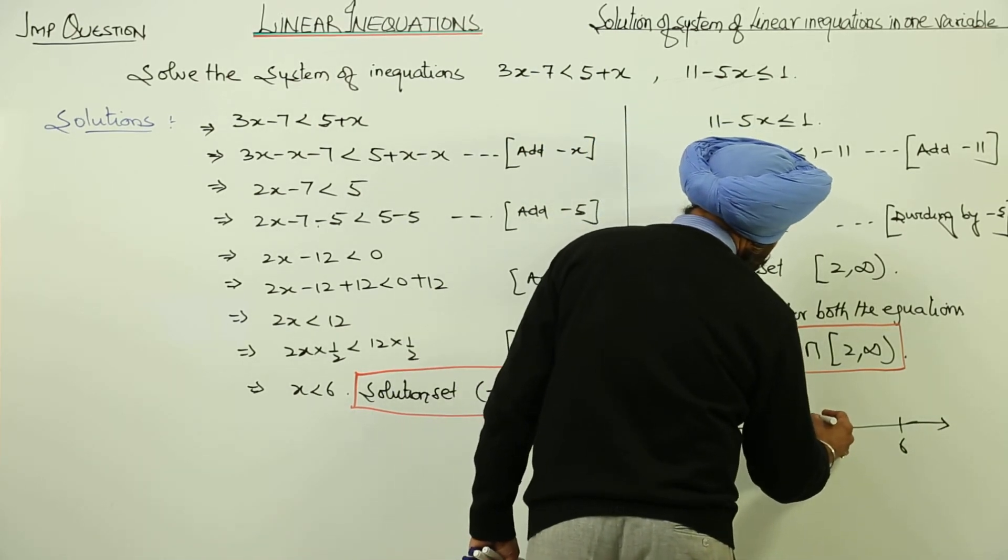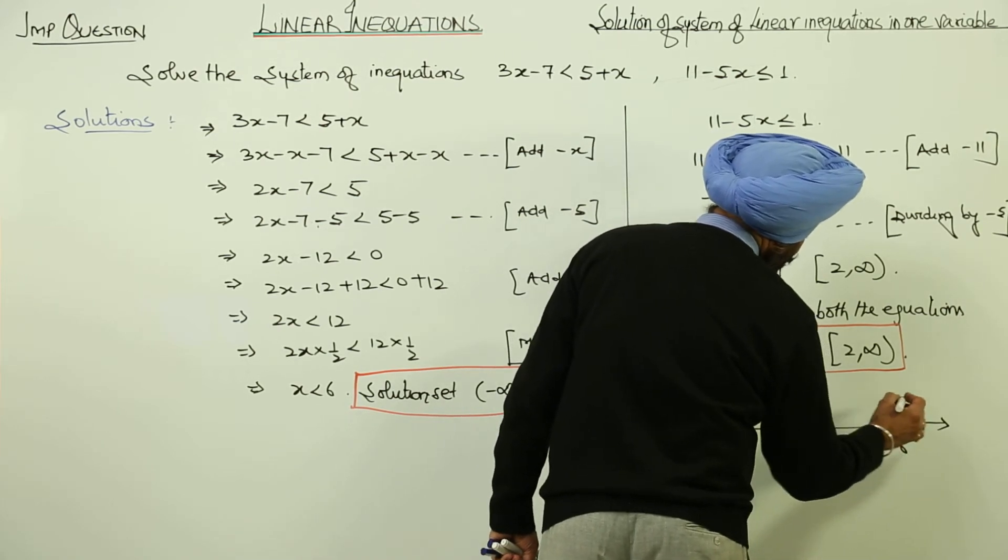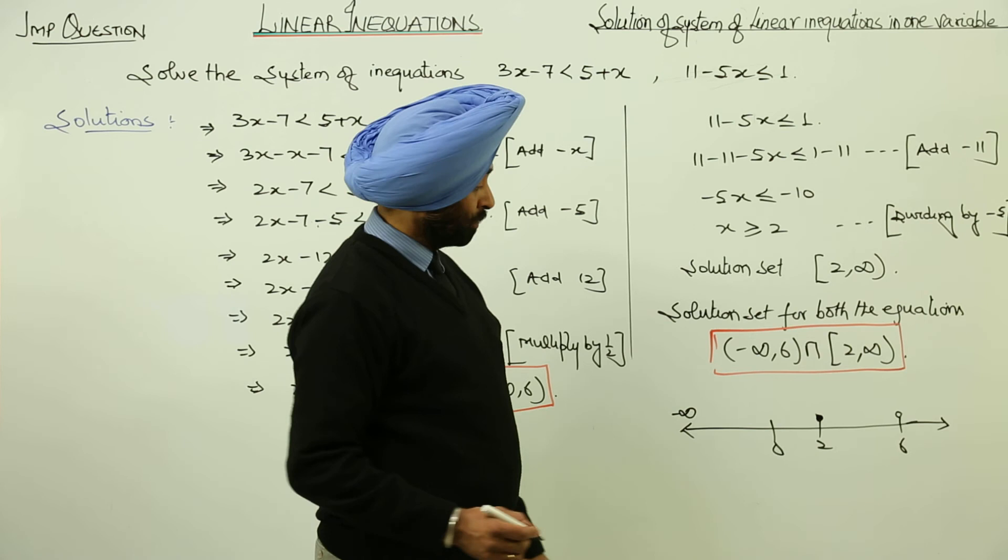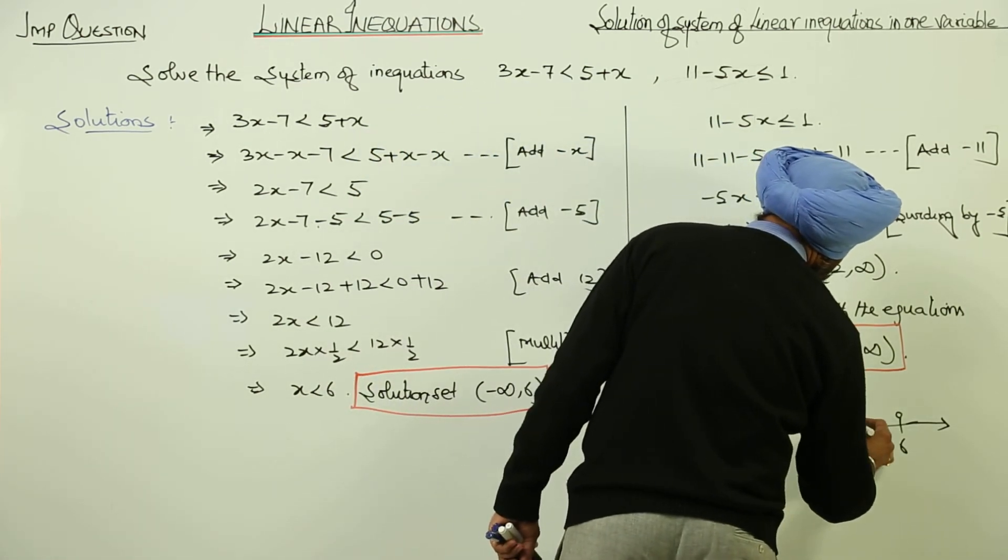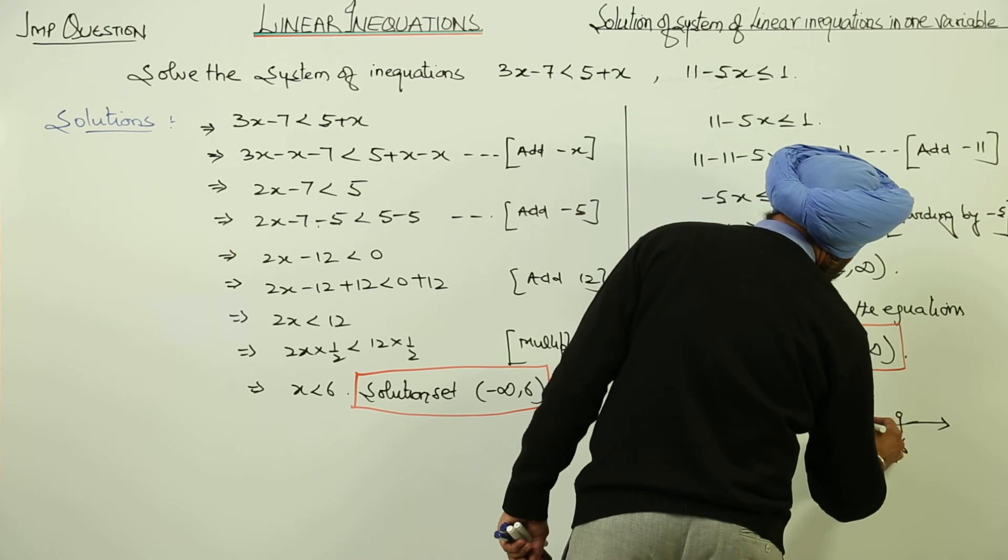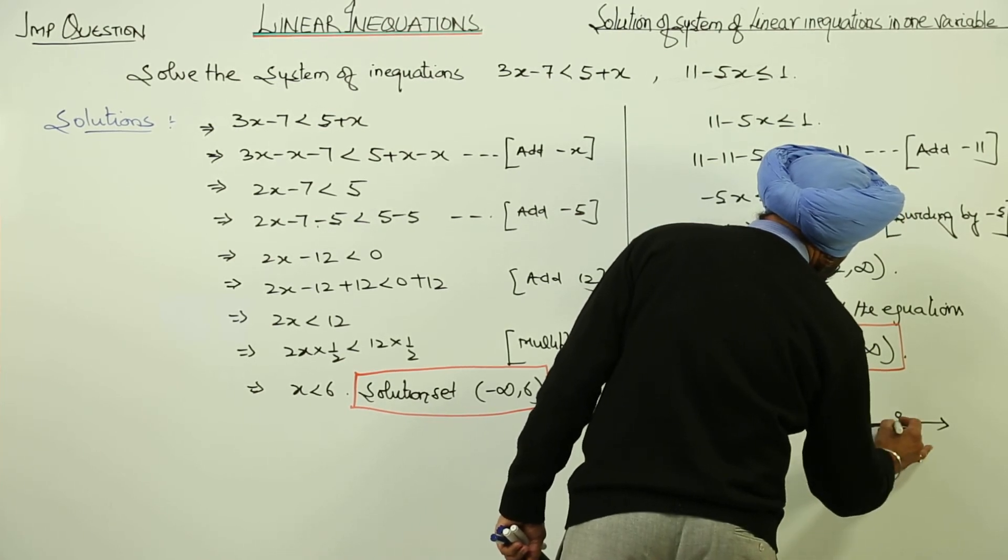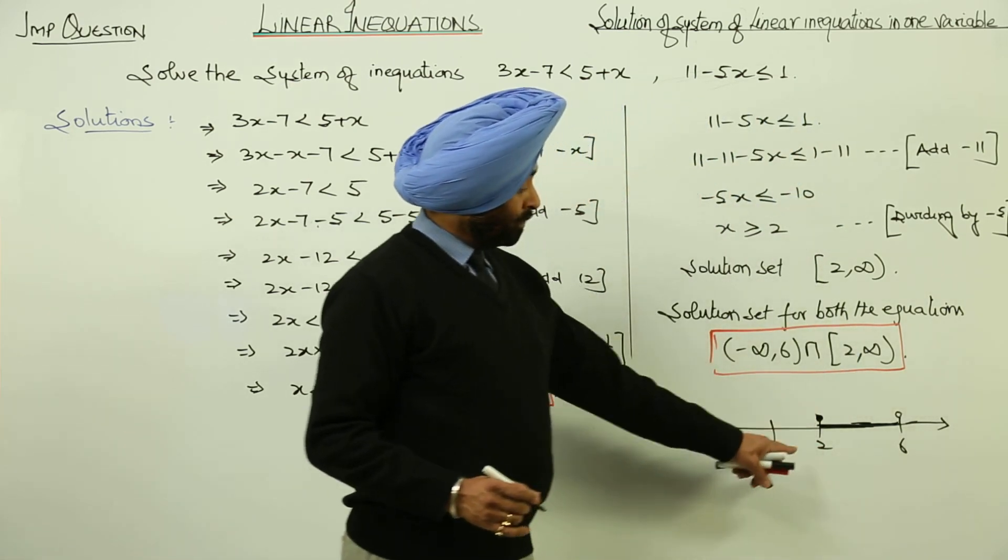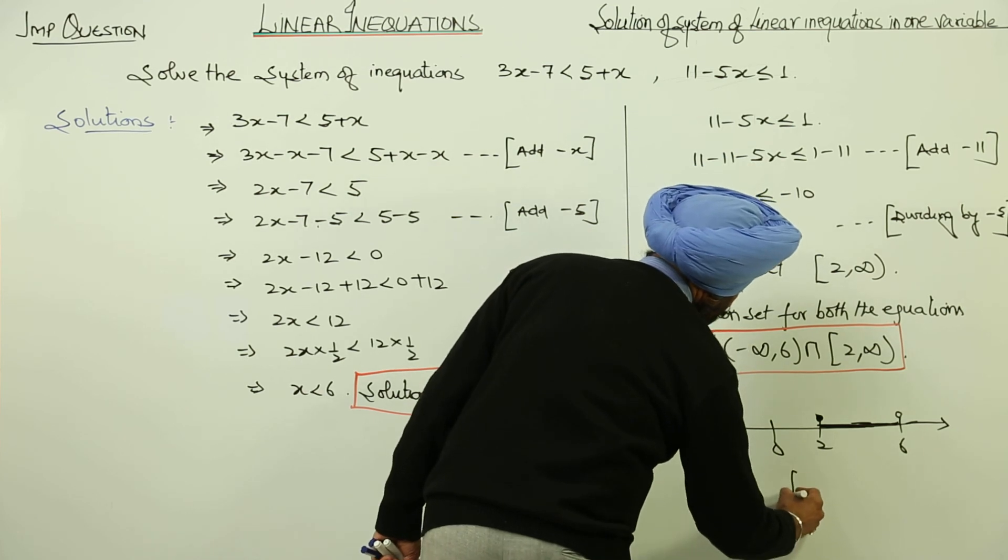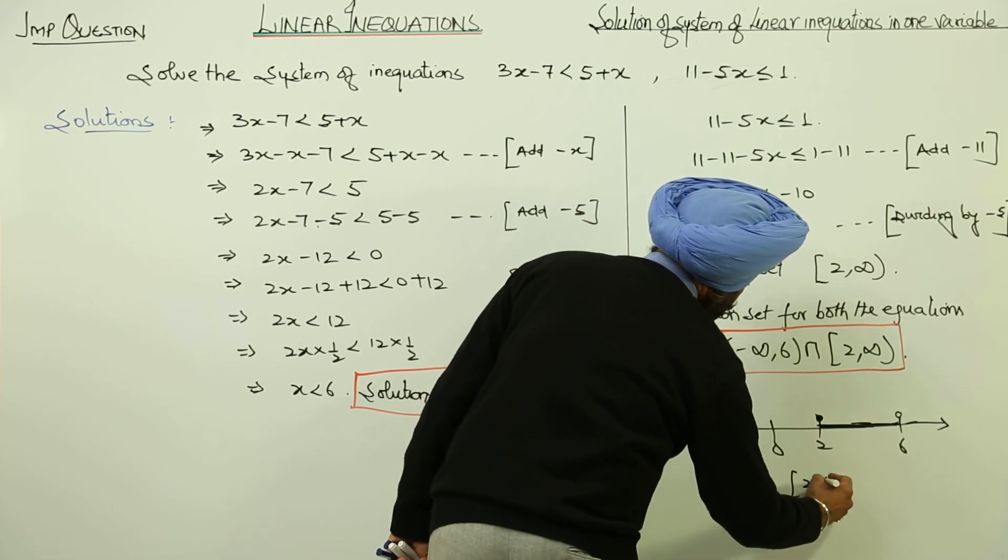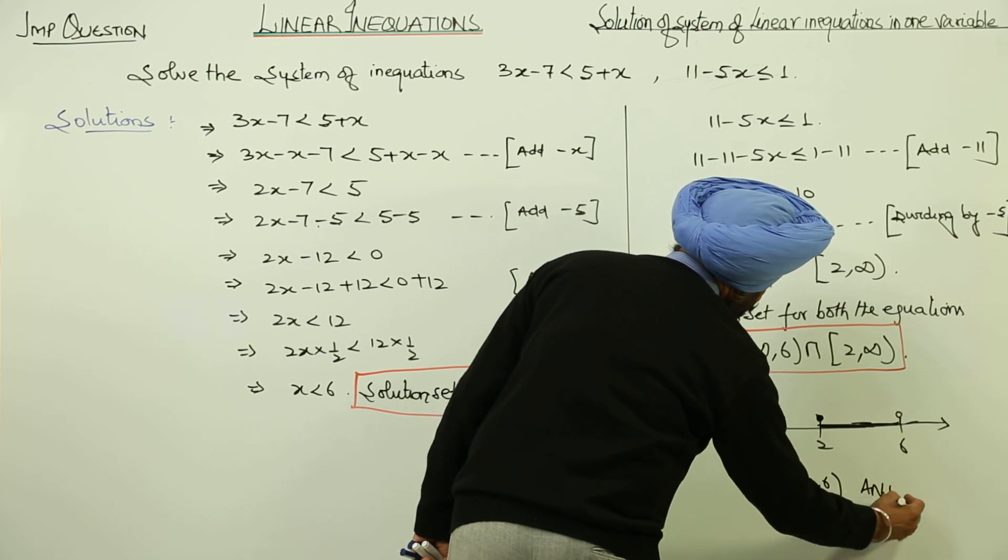This extends to negative infinity. Now 2 is in bold form and 6 is hollow. So the common solution of the equations is from 2 to 6. We can write it as the interval from 2 to 6.